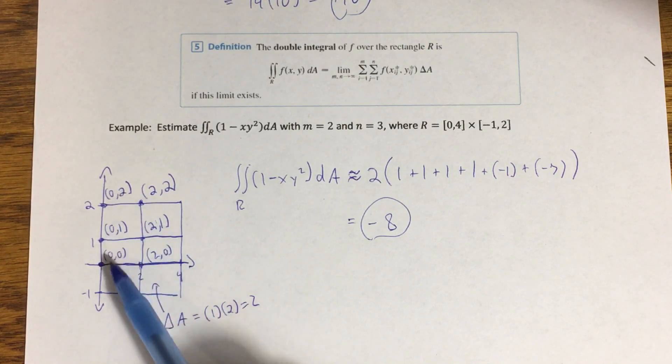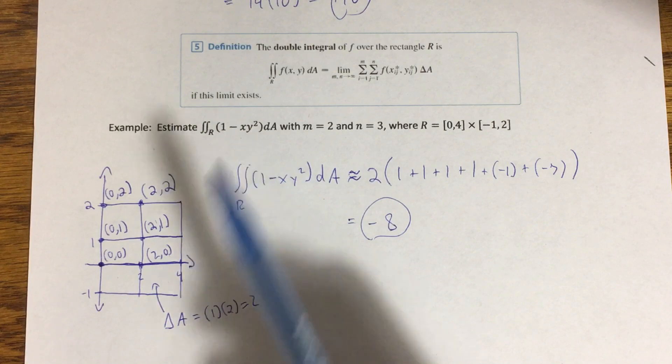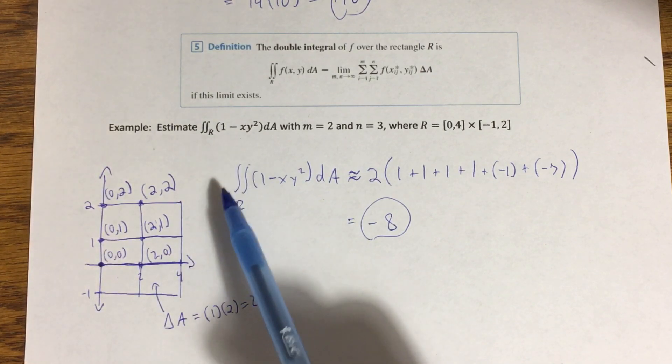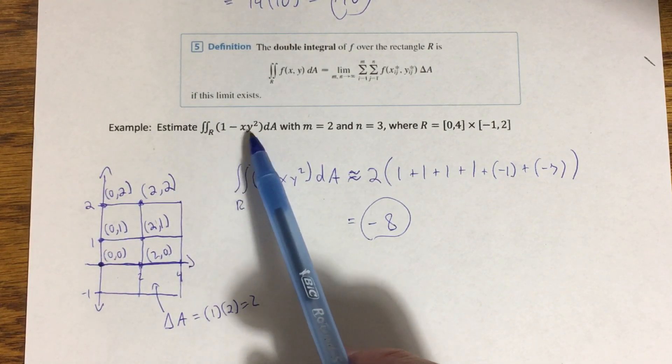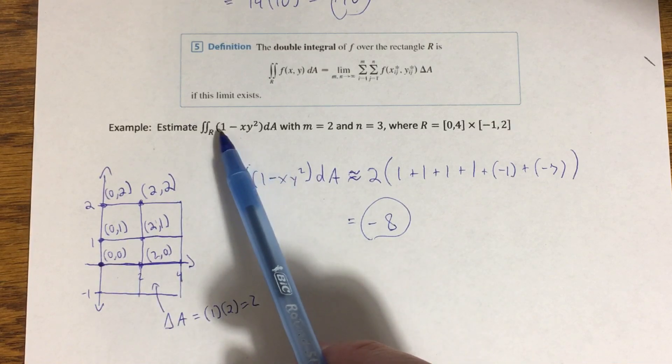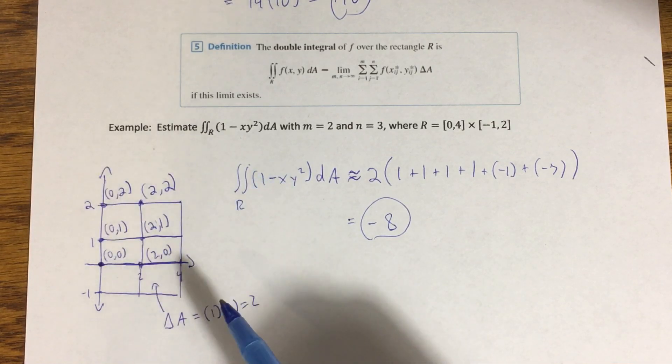And remember, part of this process is picking little sample points in each one of these sub-rectangles. Well, you can choose your sample points in such a way that makes the computation easier on yourself. I'm choosing the upper left corner of each of these sub-rectangles to act as my sample points.